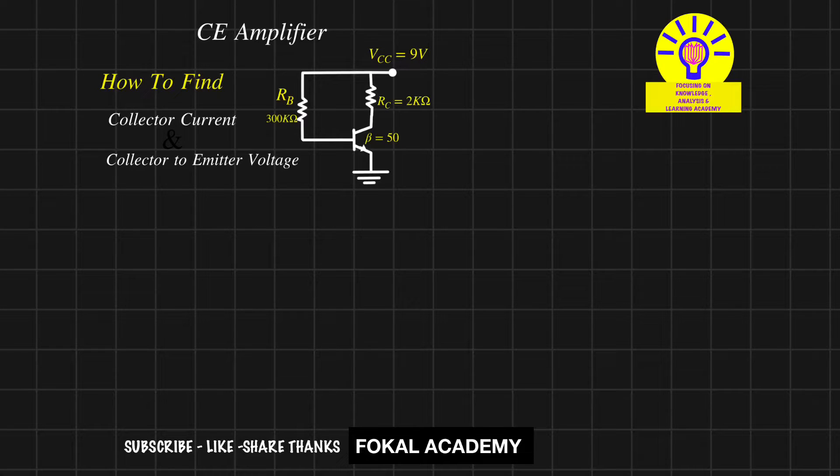Hi, welcome to Focal Academy. In this problem, here is a CE amplifier. How can you find collector current and collector to emitter voltage? Let's observe: this is base, this is emitter, and this is collector. In the collector the current is IC, in the base the current is IB, and in the emitter the current is IE.